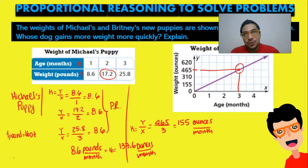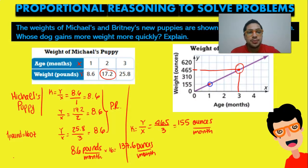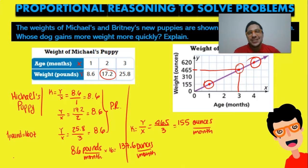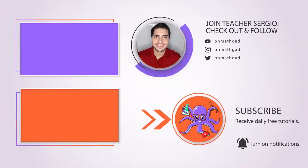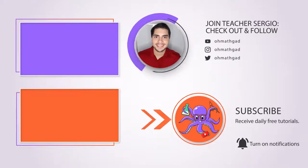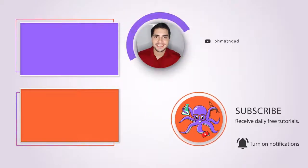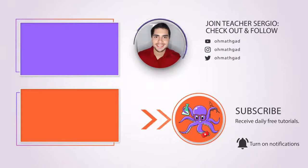That's it guys! Try solving these problems again — you can use any point you want from the graph to find the constant of proportionality k. Practice with this point or another, and you'll still get the same answers. Check out these other videos to improve your math skills, make sure you click that subscribe button to help the community grow, follow OmathGod on social media, drop a like and a comment below, and see you on the next one — bye guys!